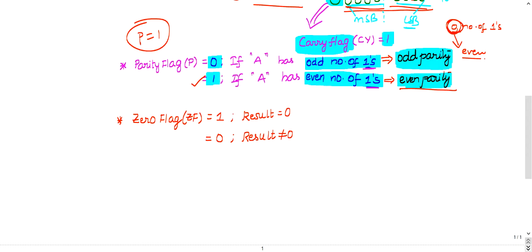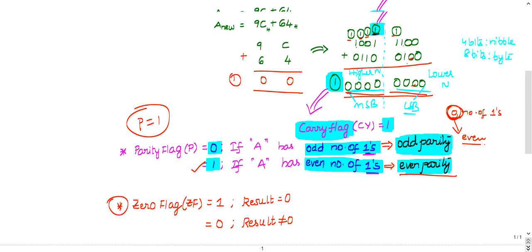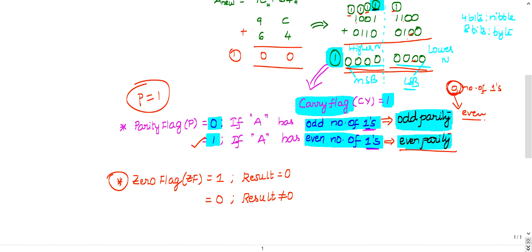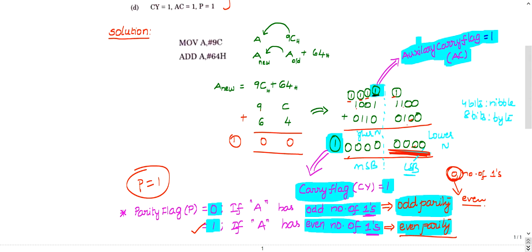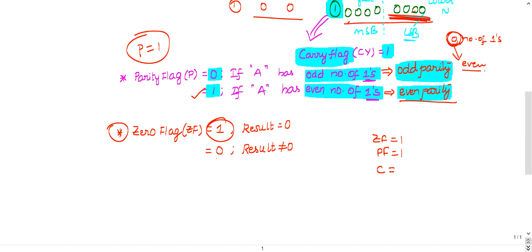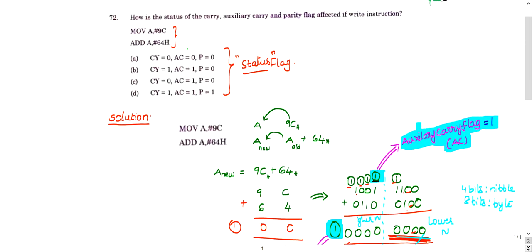Additionally, the zero flag is set to 1 when the result is zero. In our case, both the lower nibble and higher nibble of the result are completely zero, so the zero flag is set to 1. Summarizing: the zero flag is 1, parity flag is 1, carry flag is 1, and auxiliary carry flag is 1 — all flags are set to 1.